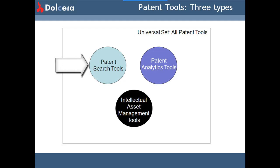In the Patent Search Engines category, we have the Thomson-based tools: Micro Patent, Delphion, Thomson Innovation, Questil, LexisNexis, Google Patents, and the patent office's own search tools including USPTO's search engine, eSpaceNet, etc.